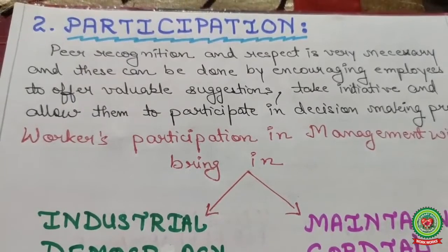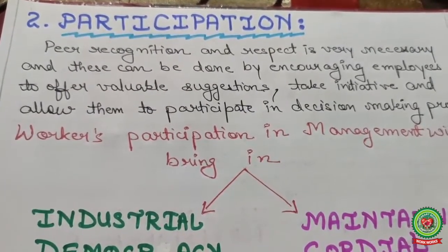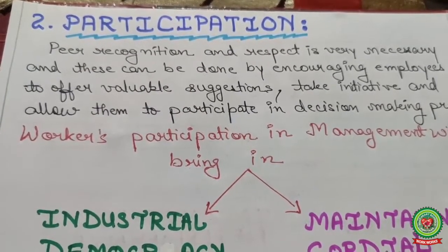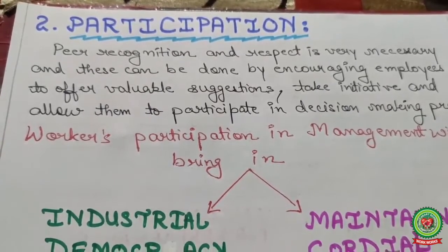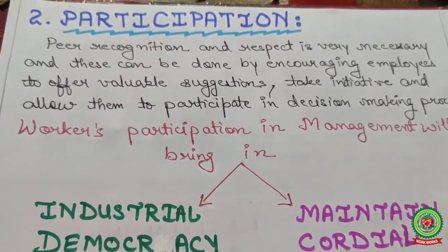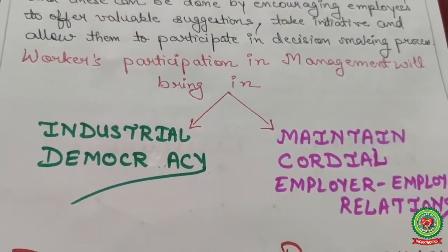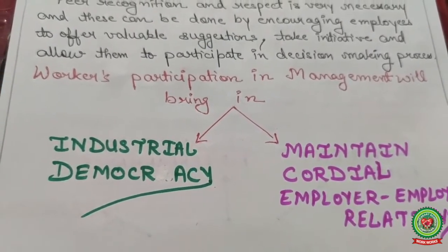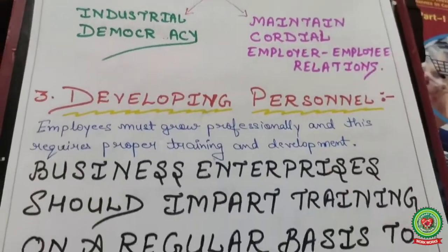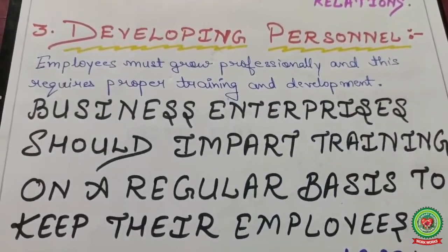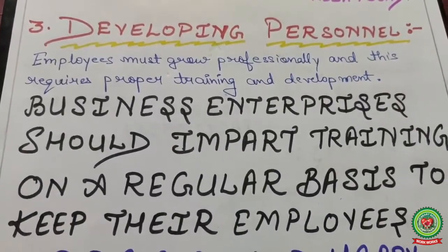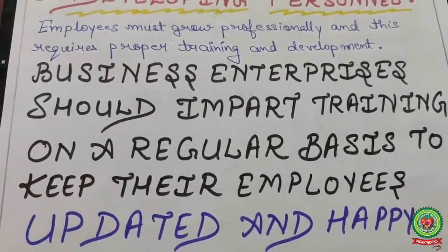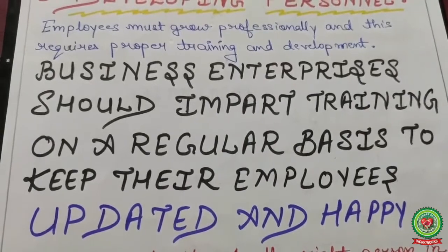Peer recognition and respect are very necessary. These can be done by encouraging employees to offer valuable suggestions, take initiative, and allow them to participate in the decision-making process. Workers' participation in management brings industrial democracy and maintains cordial employer-employee relations. The next point is developing personnel: employers must grow professionally, which requires proper training and development. Business enterprises should impart training on a regular basis to keep employees updated and happy.